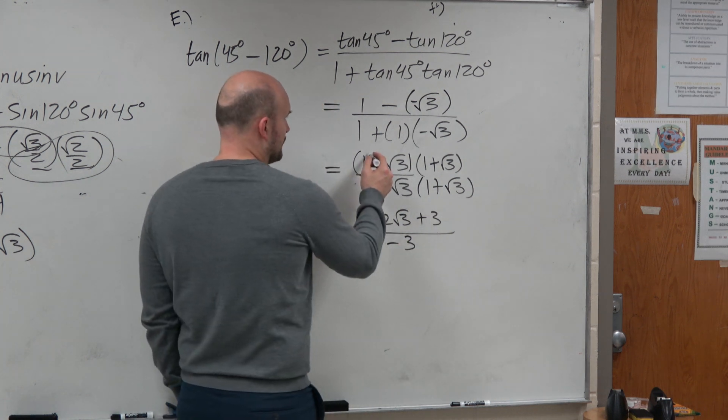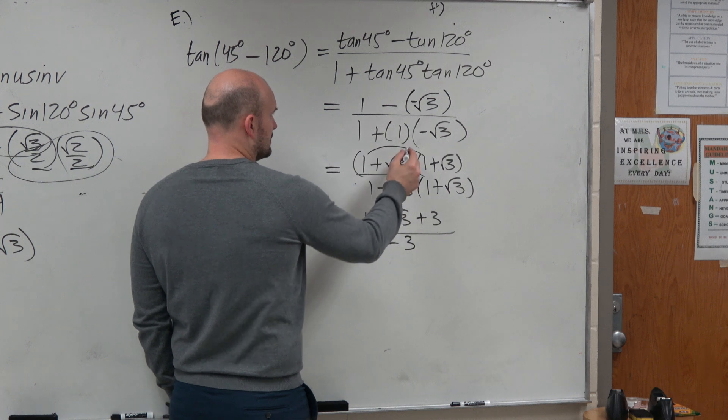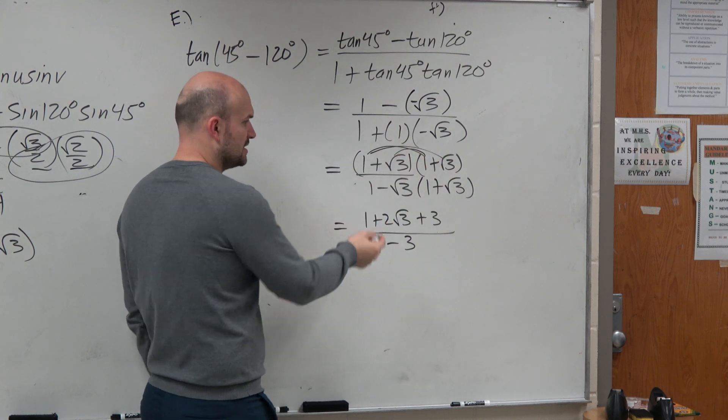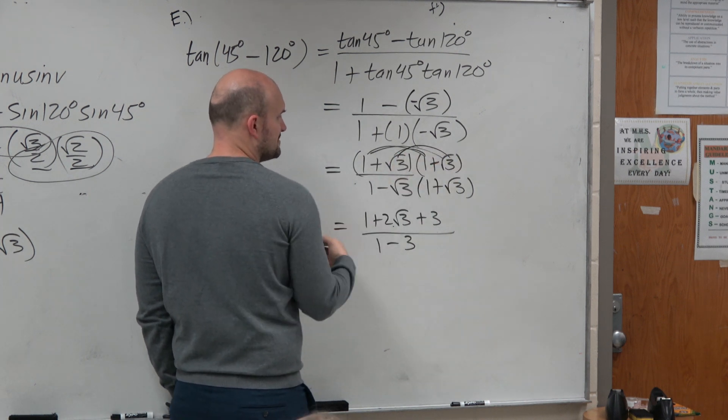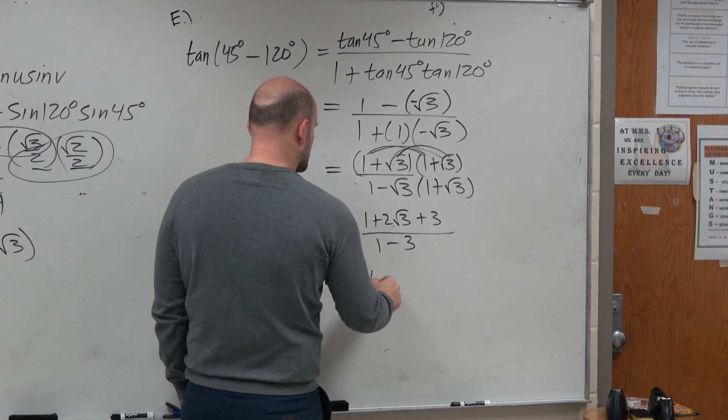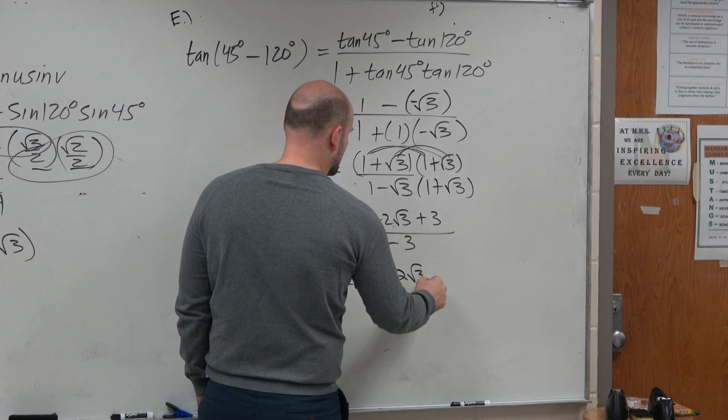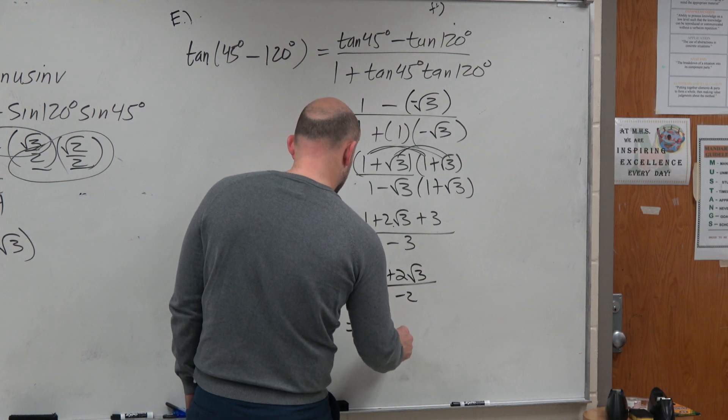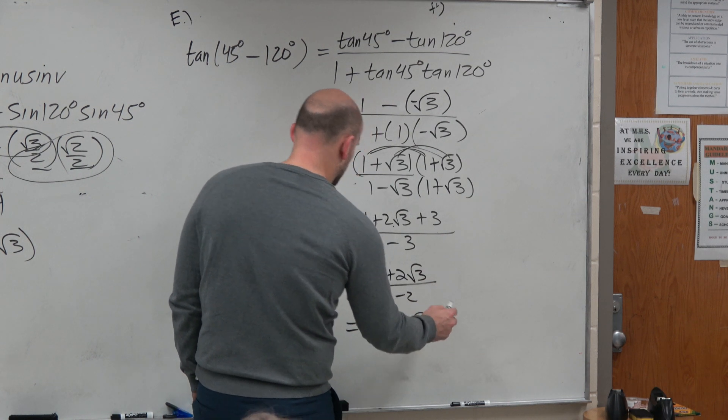If not, just do FOIL. 1 times 1 is 1. This would be square root of 3, square root of 3. Square root of 3 plus square root of 3 is 2 square root of 3. And then square root of 3 times square root of 3 is 3. Now, I can simplify this to 4 plus 2 square root of 3 all over negative 2, which gives me a negative 2 minus the square root of 3.